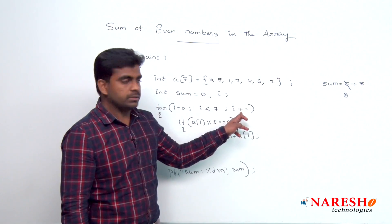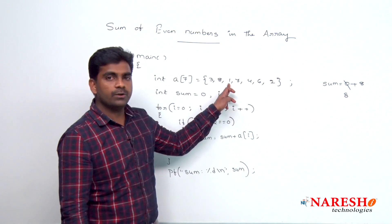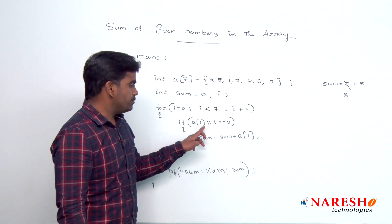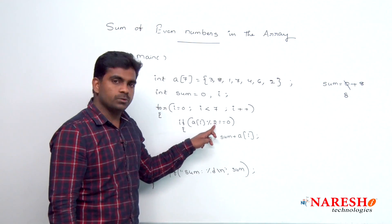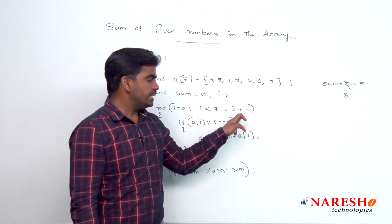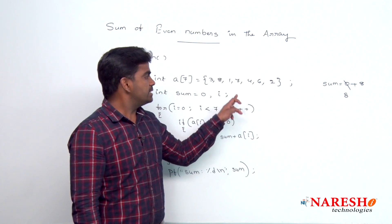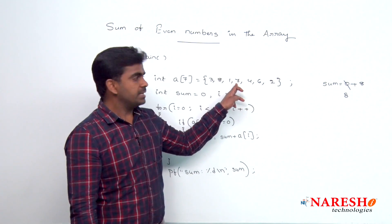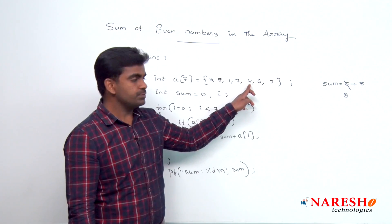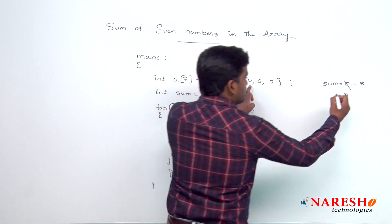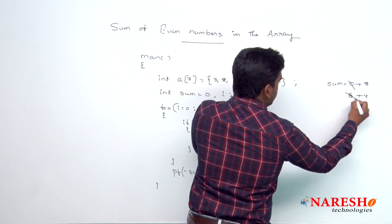Next, i value becomes 2. In the second location, what is the element? 1. So, condition false, 1 is not divisible by 2. Next, i value increase, i value becomes 3. Next, i value becomes 4. Yes, 4 is divisible. So, 4 will be added, value becomes 12.